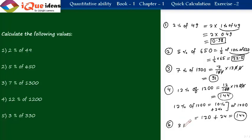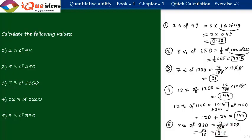Question 5: 3 percent of 330. Use the conventional method: 3 by 100 into 330. This simplifies to 3 by 10 into 33, which is 99 by 10, giving a final answer of 9.9. When the calculation is straightforward, do it directly without looking for alternate methods.